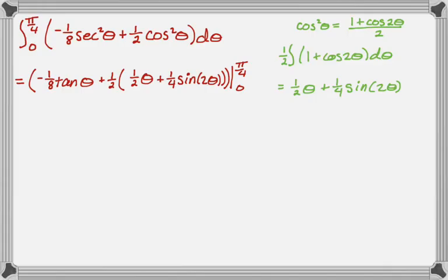And now I'm going to plug in. So plugging in pi over 4 is not the end of the world, because the tangent of pi over 4 is 1, and then the sine of 2 times pi over 4 is the same as the sine of pi over 2, which is 1. So not so bad. So it's going to be negative 1 eighth plus 1 half, and there we go. So pi over 4 times 1 half is pi over 8, and then we said sine of pi over 2 is 1, so there, and then it's minus, it turns out when you plug in 0, the tan of 0 is 0, theta is obviously 0, and the sine of 0 is 0, so that all goes away, which is nice.